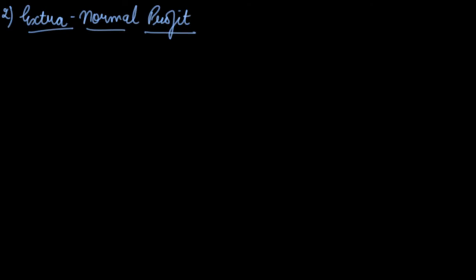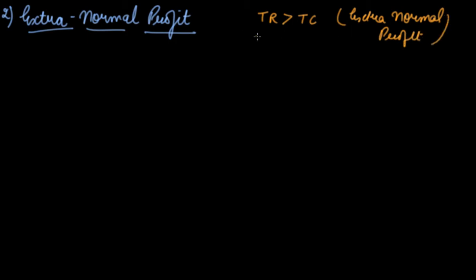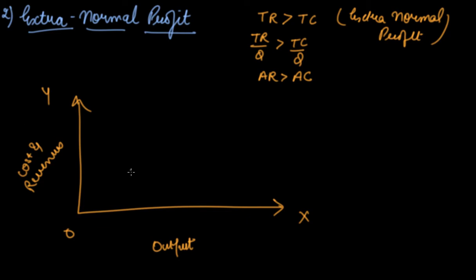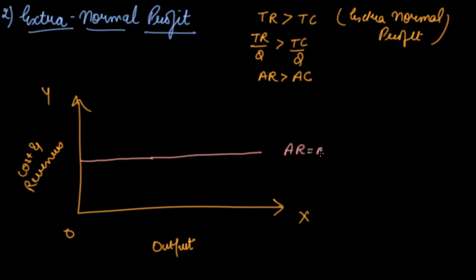Next comes extra normal profit, also called supernormal profit. When your total revenue is greater than your total cost, you earn extra normal profit. Dividing both sides by Q, we get AR greater than AC. In a perfect competition graph, your AR equals MR equals price, which is a straight horizontal line.